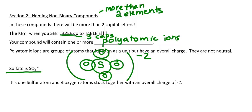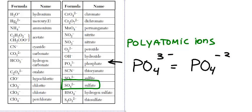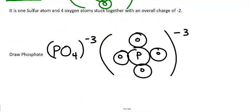I asked you to draw phosphate, so pause the video now and draw phosphate. From Table E, you can see phosphate is PO4 with a minus three charge. PO4 minus three and PO4 three minus are exactly the same thing. Check to see that you drew it correctly — you should have one phosphorus in the middle and four oxygens with an overall charge of negative three. This whole thing represents one unit of phosphate — that's a polyatomic ion.